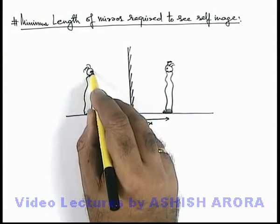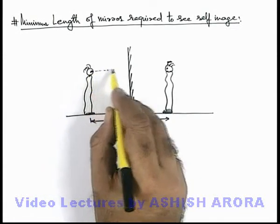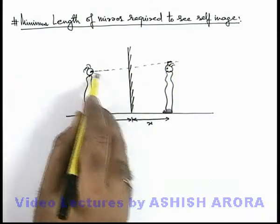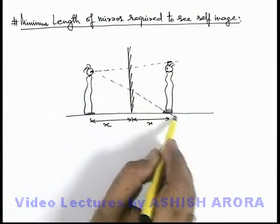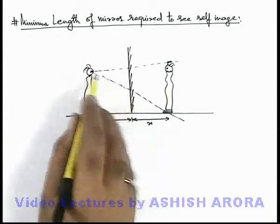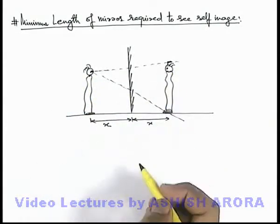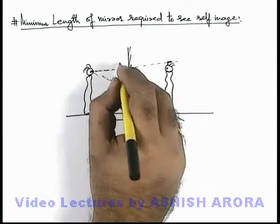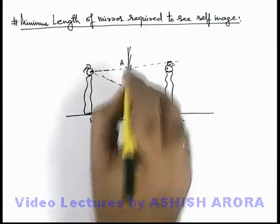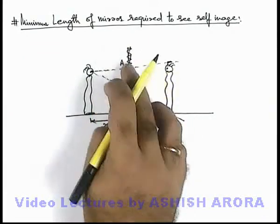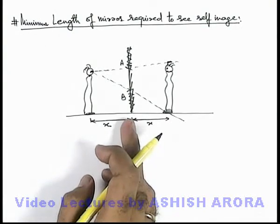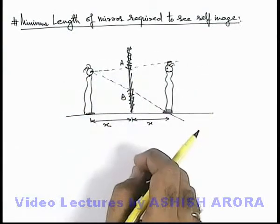So if we create the field of view by joining the eye of the observer to the extremities of the image — like this — then we can say that if this is the field of view of the observer, he'll be able to see the complete image. So here, if the image is bounded by points A and B, and the mirror above and below the segment AB is removed, even after that he'll still be able to see the complete image.